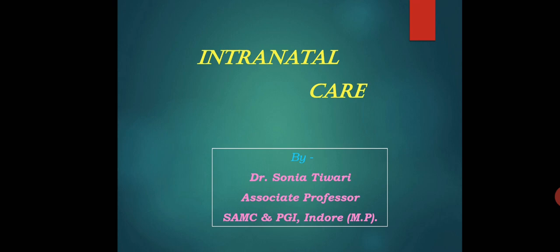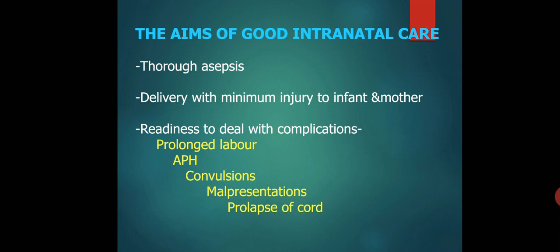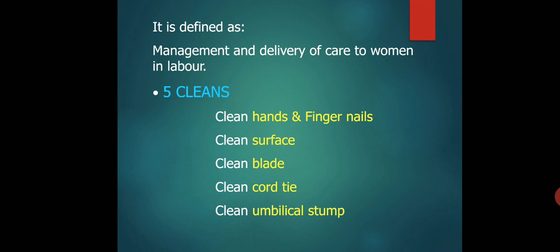Today we are going to see what is intranatal care. It is defined as the management and delivery of care to the woman in labor. The five cleans are: clean hands and fingernails, clean surface, clean blade, clean cord tie, and clean umbilical stem. The aims of good intranatal care are thorough asepsis, delivery with minimum injury to the infant and the mother, and readiness to deal with complications like prolonged labor, antepartum hemorrhage, convulsions, malpresentation, and prolapse of the cord.